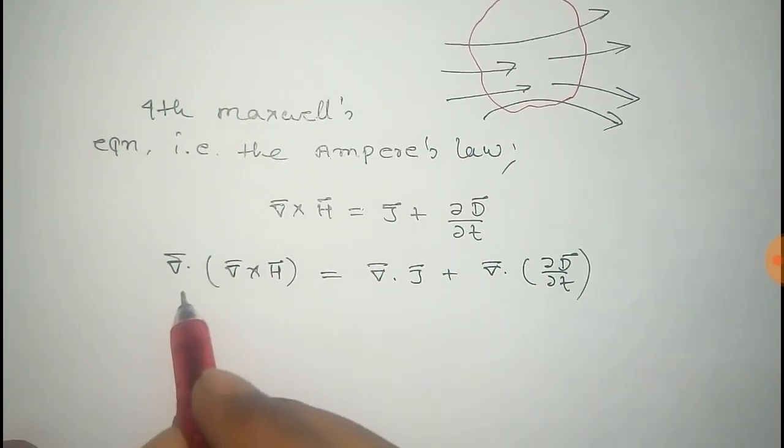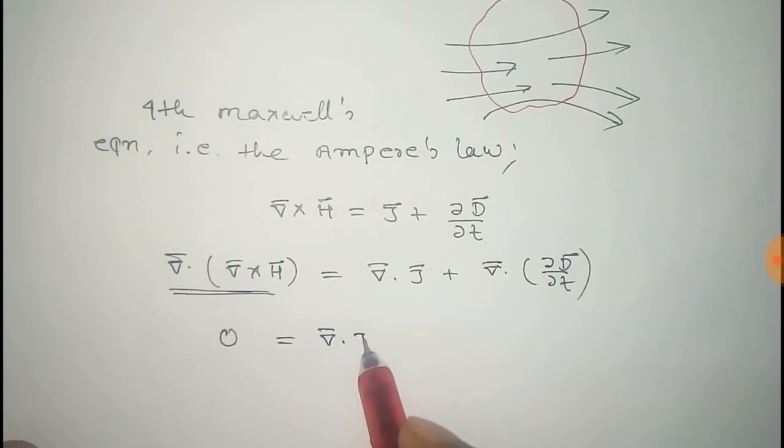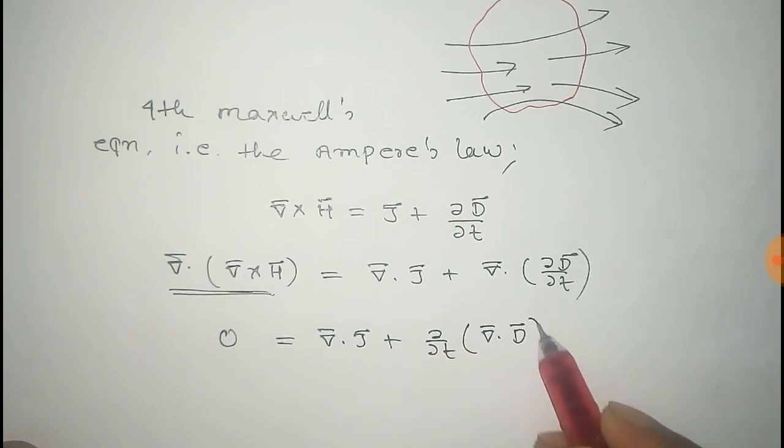Now, by the vector identity, the divergence of curl is zero. So that equals divergence of J plus del del T of divergence of D.